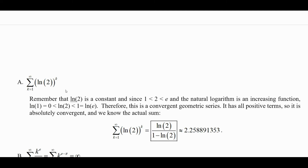Natural log of 2 to the k power. Natural log of 2 is a constant. Since 2 is between 1 and E and the natural logarithm is an increasing function, the natural log of 2 is between the natural log of 1 and the natural log of E. Natural log of 1 is 0 and natural log of E is 1, so natural log of 2 is a constant between 0 and 1. We have a constant base to the power k — that is a geometric series. Since the base is less than 1, that is a convergent series.